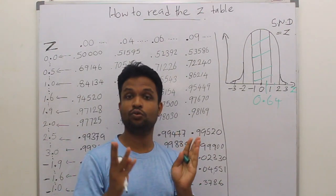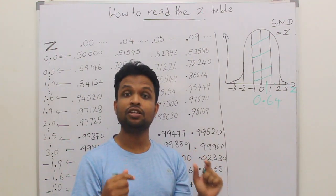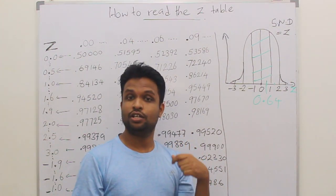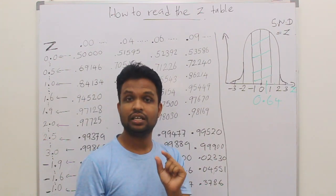To calculate the probability, I told you we can do two things. One is integrate the formula. The second one is we can use the Z table. In this lecture, I am going to discuss how to read the Z table.